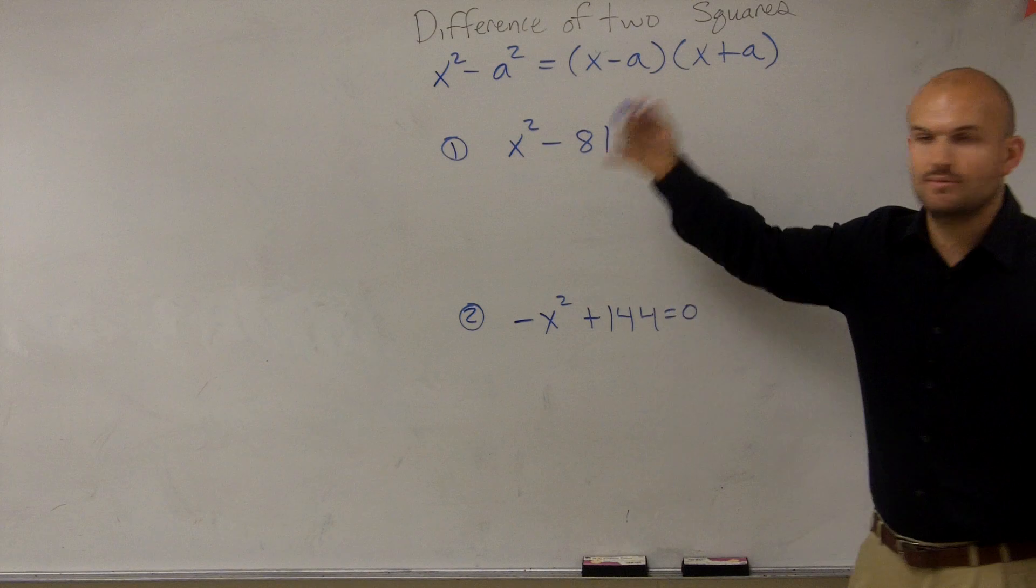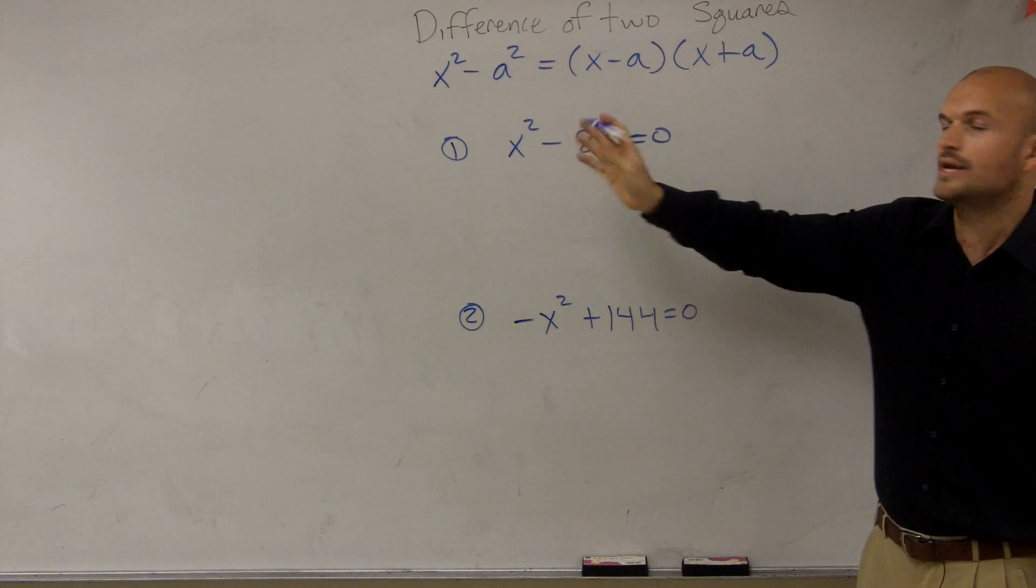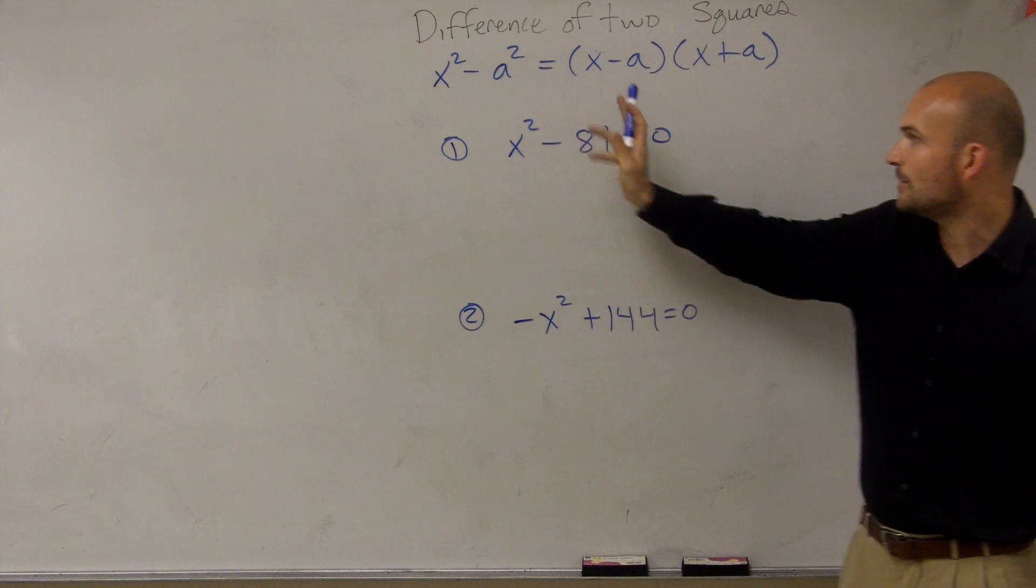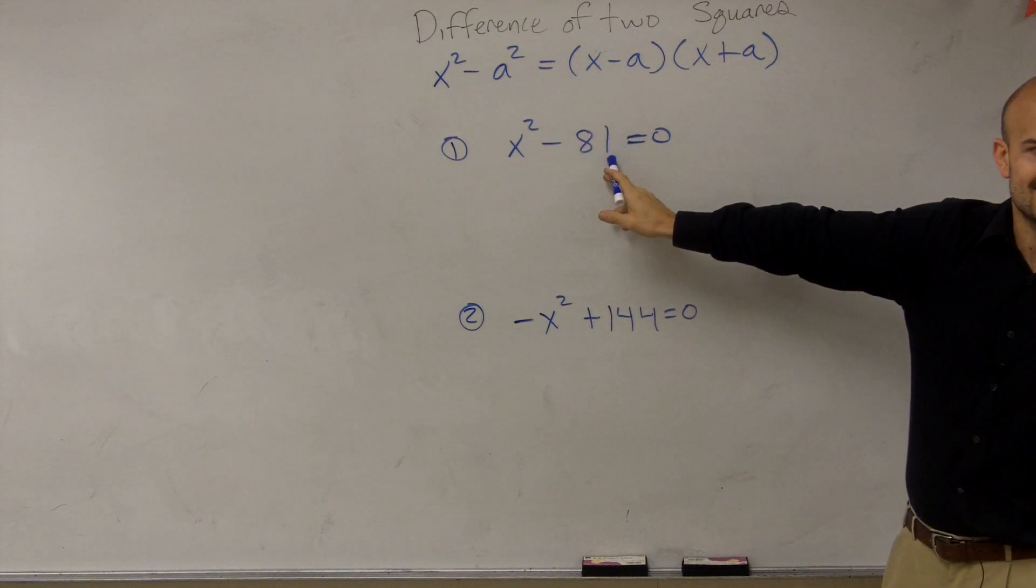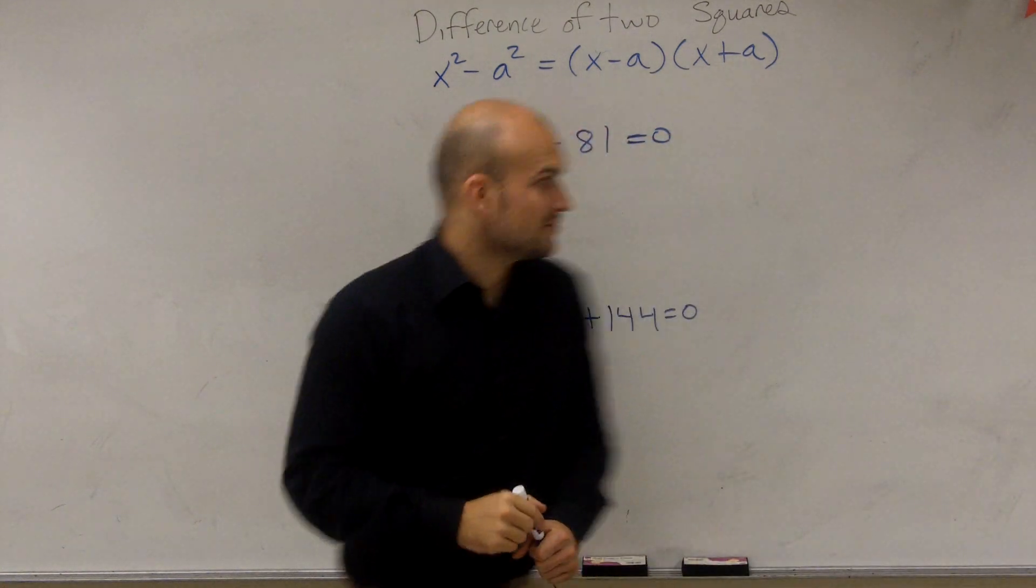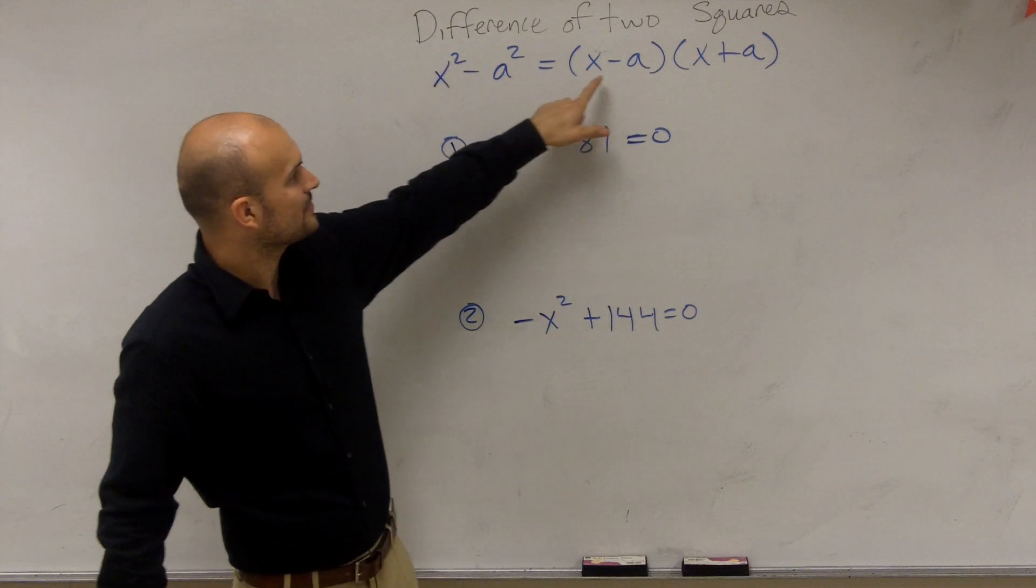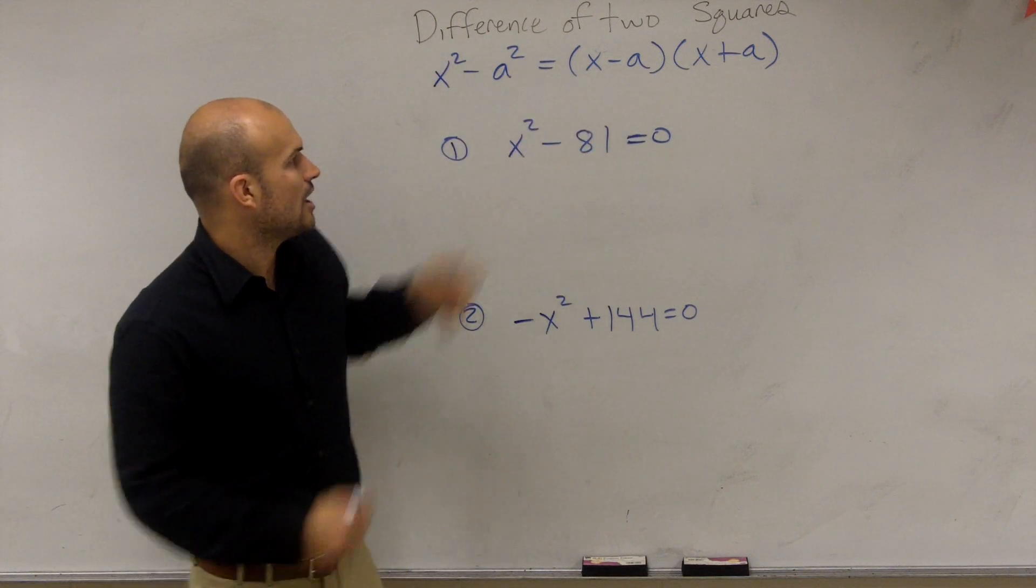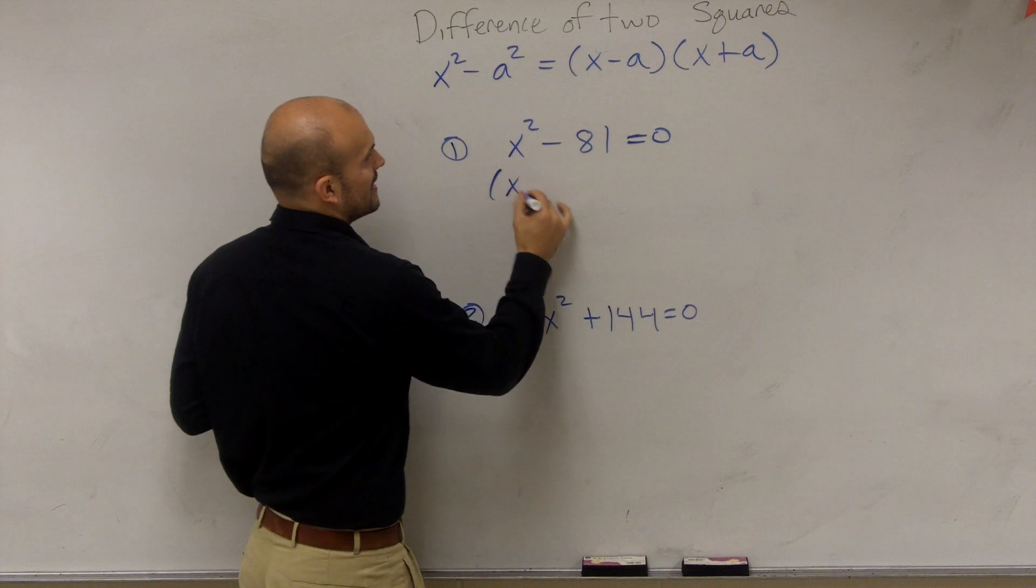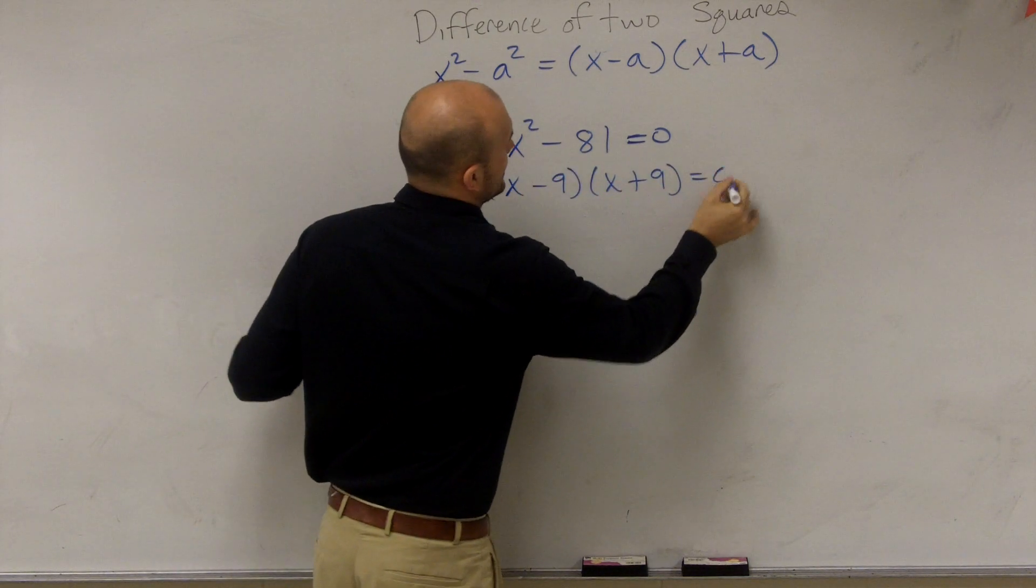So first of all, we first look for it, can we factor anything out? No, there's nothing that these two terms share, right? But is this a square number and is this a square number? Is it a difference of two squares? Yes, difference is subtraction, right? So therefore, all we write that is, if it's x² and a², all we can write this then as is x minus 9 times x plus 9 equals 0.